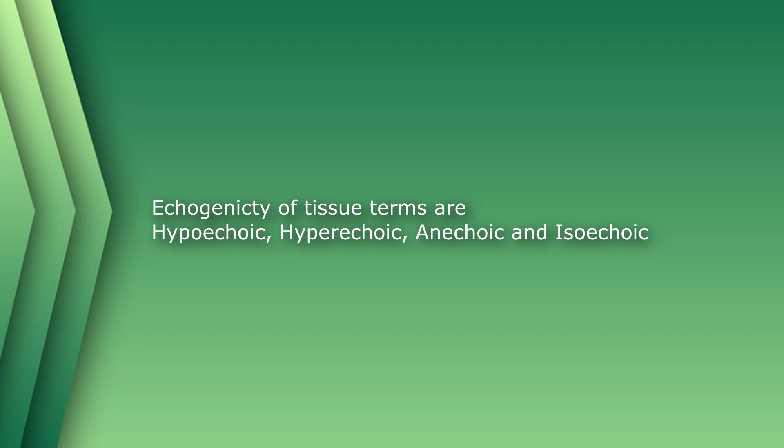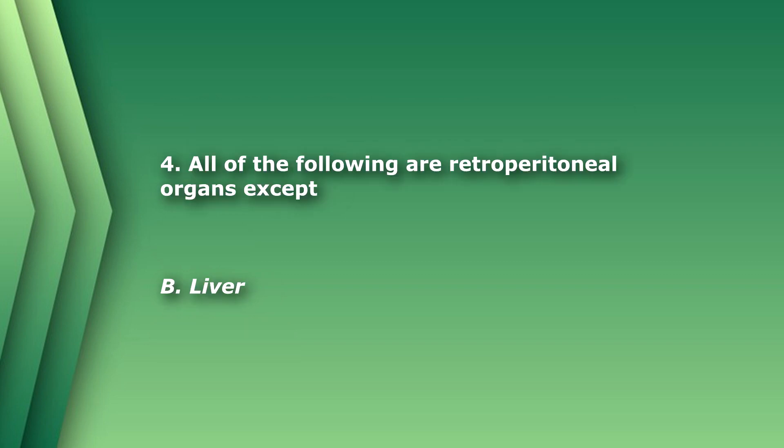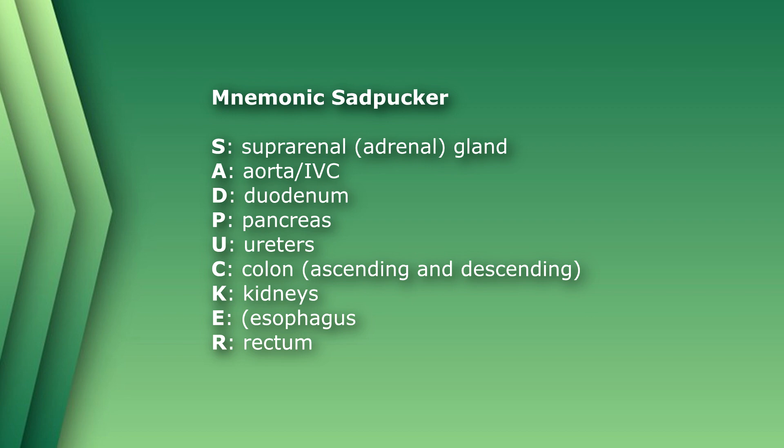Question 4: All of the following are retroperitoneal organs except: A) adrenal glands, B) liver, C) kidneys, D) pancreas. The answer is B) liver. A mnemonic to remember the retroperitoneal organs is SAD PUCKER.